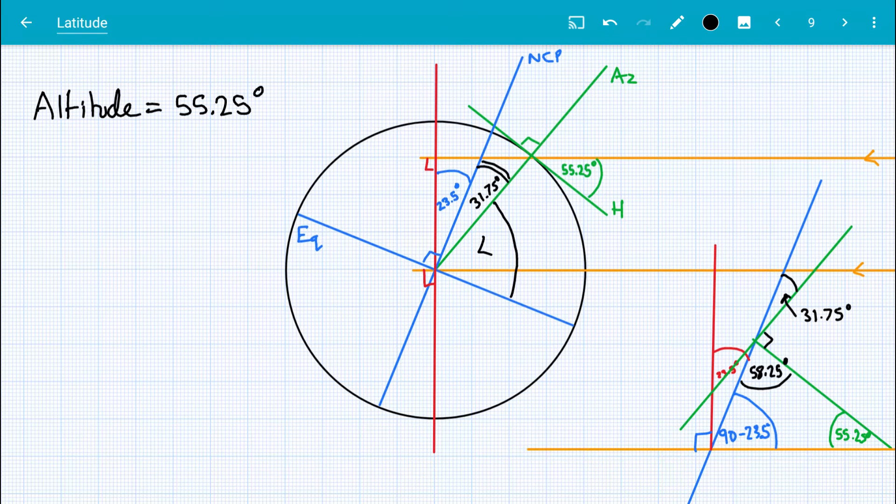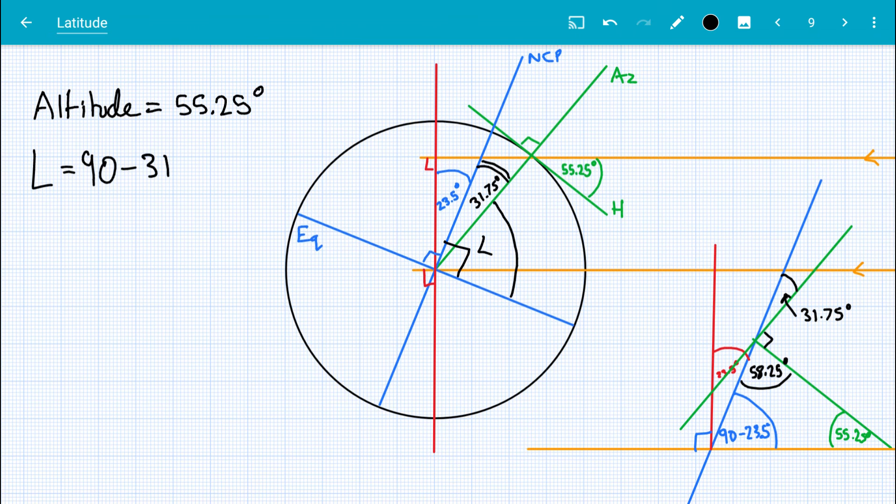And I can fill that in on this diagram here. 31.75 degrees. And so our latitude, L, is going to be 90 degrees, that's the angle between the two blue lines here and here, 90 degrees subtract that 31.75 degrees, giving us 58.25 degrees.